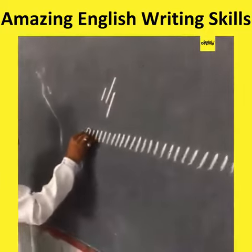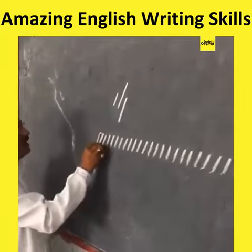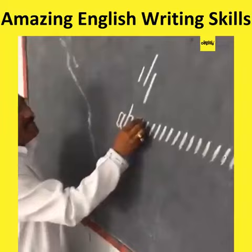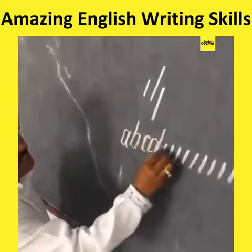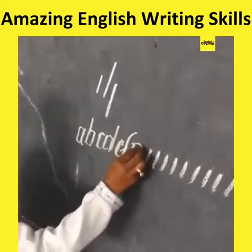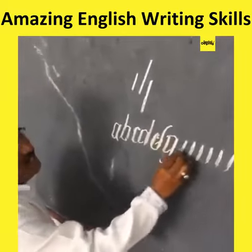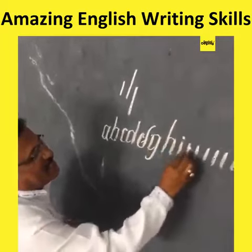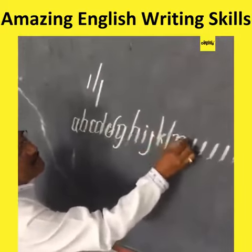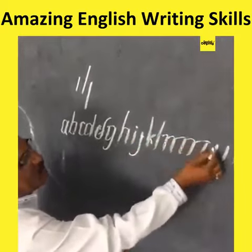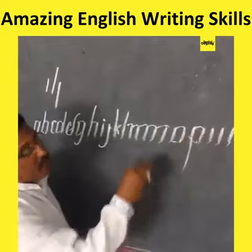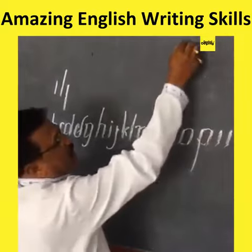What happened here? What is your name? This is a B, this is a C, this is a D, this is a E, F, G, H, I, J, K, L, M, N, O, P. That's how you get to know a C.